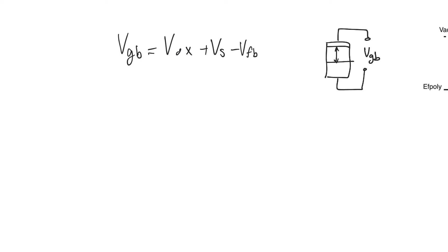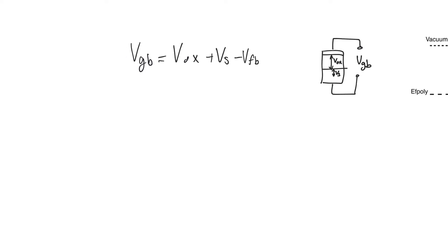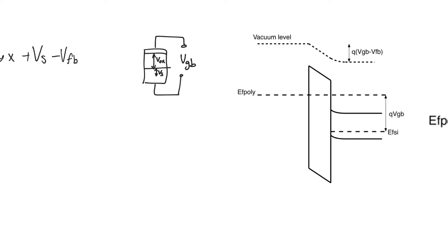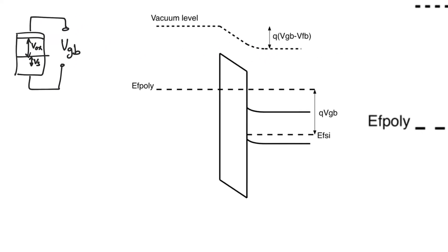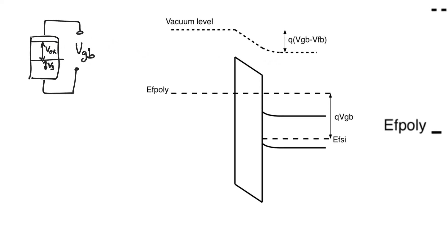So there will be a drop of V_oxide on the oxide, a drop of V_surface on the surface of the substrate — because the rest of the substrate will be flat — and then there is also a difference that is made up by the flat band potential. Now let's look at the band diagram when we apply an external potential.